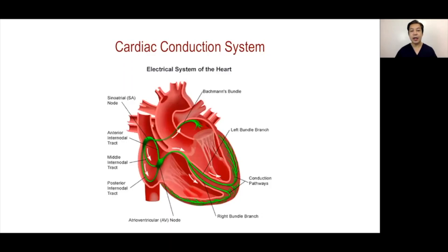Reviewing the cardiac conduction system, there are specialized conduction tissues that not only generate the cardiac impulses but also facilitate conduction of the impulses throughout the entire heart. The cardiac impulse is generated in the SA node, which is located between the superior vena cava and the right atrium.